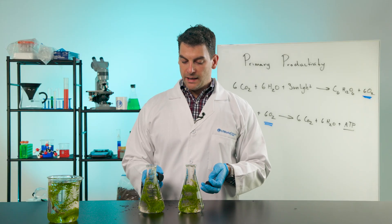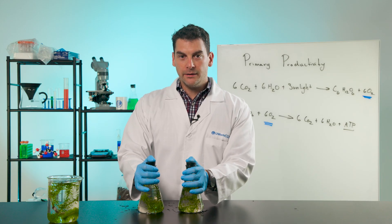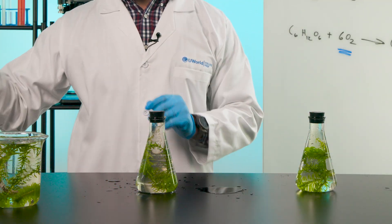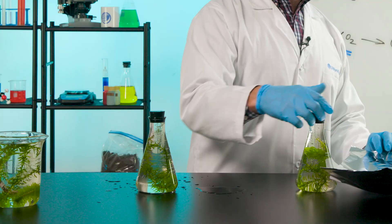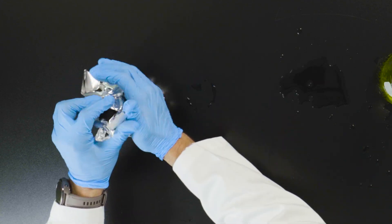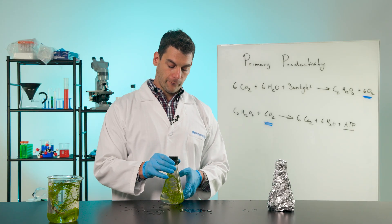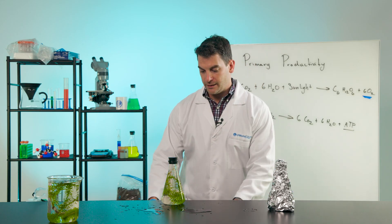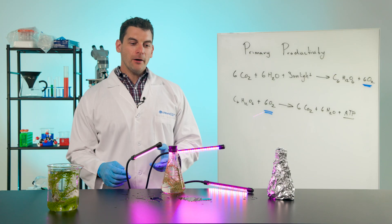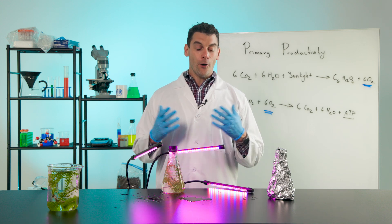Now that the elodia are placed in the flasks, seal everything — it will make a little bit of a mess, but that's okay. Then place the flasks in their respective conditions. One goes into the dark: wrap it in aluminum foil to prevent any light from reaching it, simulating dark conditions. The other is placed under a grow light to allow the elodia to perform photosynthesis. We'll let these incubate for about two to three days.